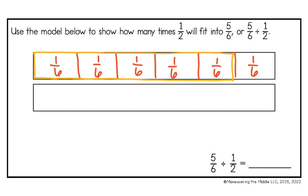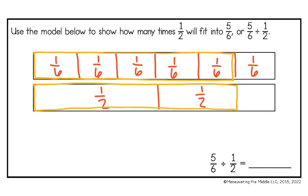Now I need to do the second fraction bar, which will represent 1 half. So I'm going to start by breaking that into halves. Remember that the amount I shade on our second fraction bar needs to match exactly what I shaded on the top fraction bar, so I'm not quite shading in 2 full pieces. I have 1 whole group, and now I need to figure out what is left over in our second group. To make 1 half I would need 3 pieces, and 2 of them are shaded in, so this would represent 2 thirds.